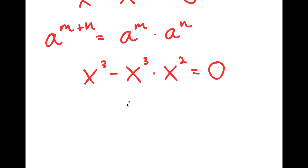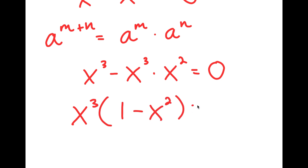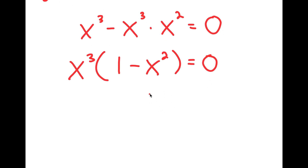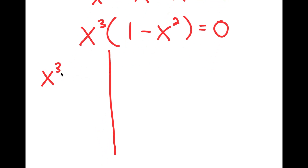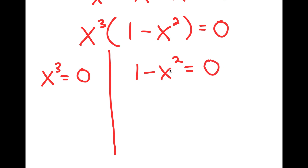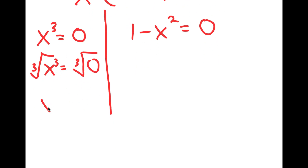Now I'm going to factor out x to the power of 3, so I get x to the power of 3 times 1 minus x squared equals 0. This gives me two equations: x to the power of 3 is equal to 0, and 1 minus x squared is equal to 0. For x to the power of 3 equals 0, I take the cube root on both sides. The cube root of x to the power of 3 is x, and the cube root of 0 is 0. So x equals 0 is one solution.